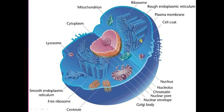Between the plasma membrane and nucleus, this gel-like substance is the cytoplasm. In the cytoplasm there are small bodies called cell organelles. One of them is the mitochondria, which helps in the respiration of the cell and provides energy. It has a filamentous shape.